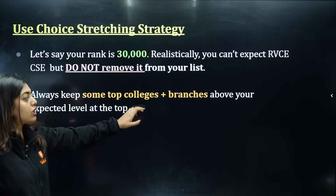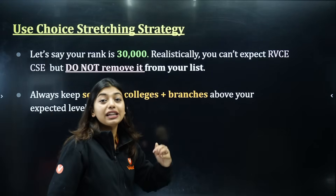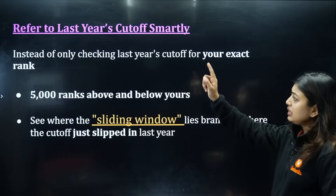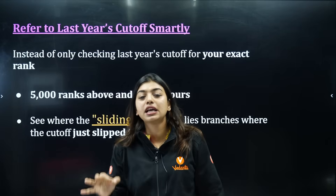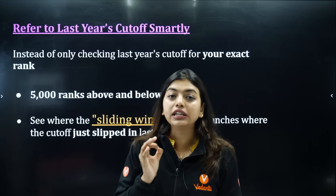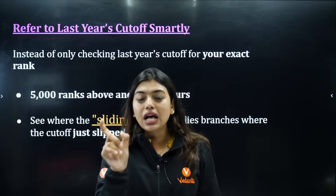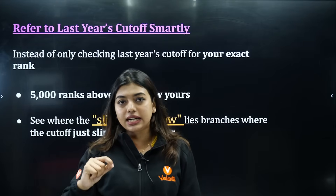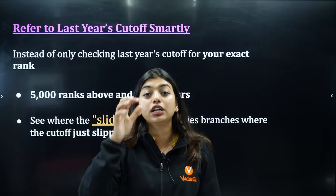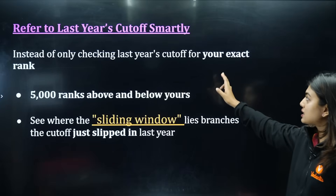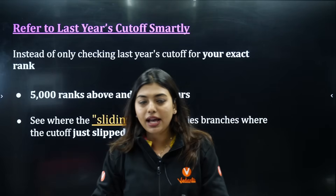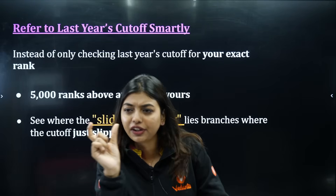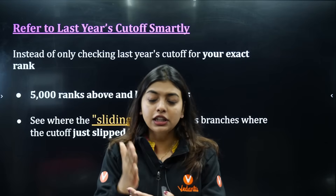One high college in your list will not harm your choice locking. Always keep some top colleges plus branches above your expected level at the top, because the system is going to select what is on the top. Next tip: refer to last year's cutoff smartly. Check the last year cutoff because even with inflation you will get an idea of which college a student settled for at your rank.